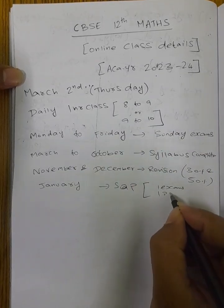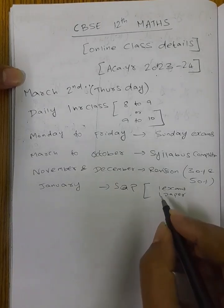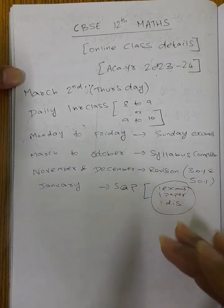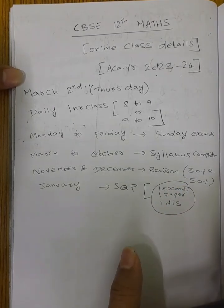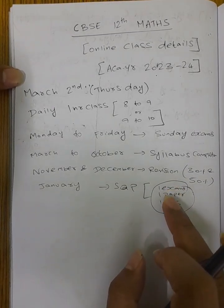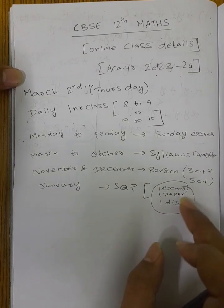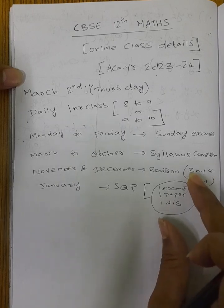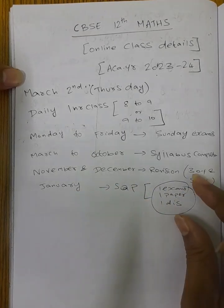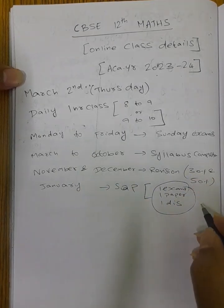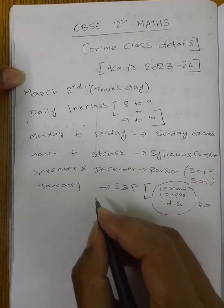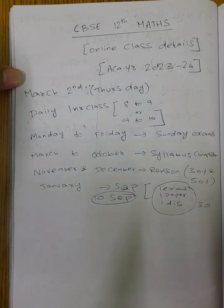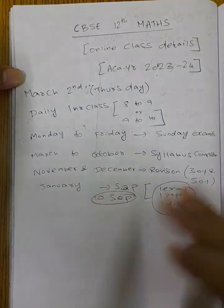Paper correction and discussion. This is a 3-3 days plan for 12th students. First day exam, second day you can send paper correction and key, third day doubt clarification. This is continuous January month 3-3 days, 1 month full — minimum 10 sample question papers. In February, exam.